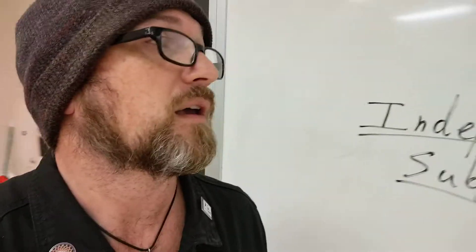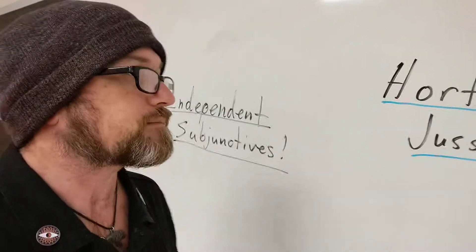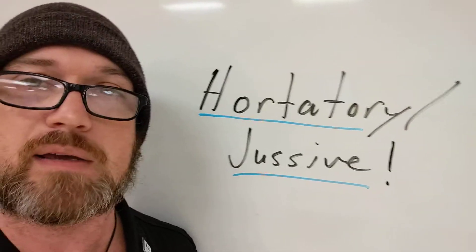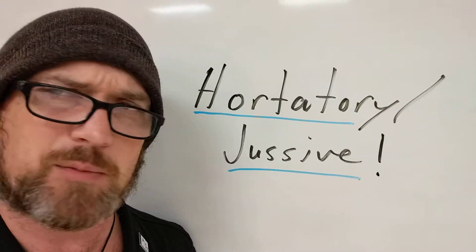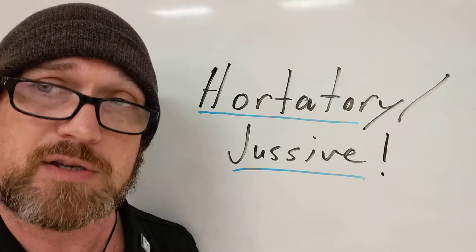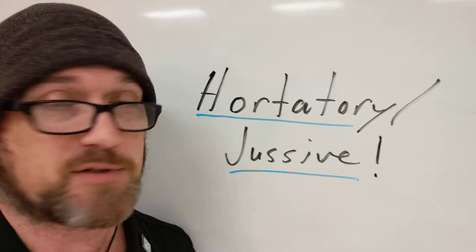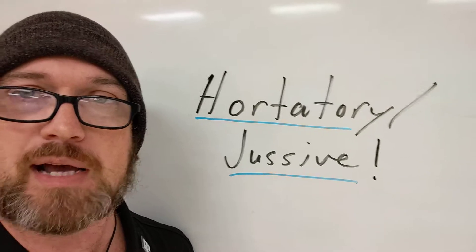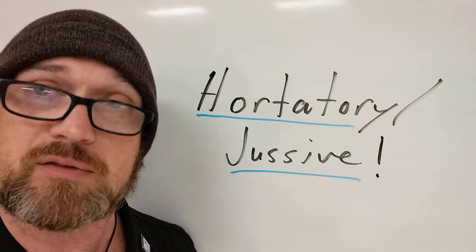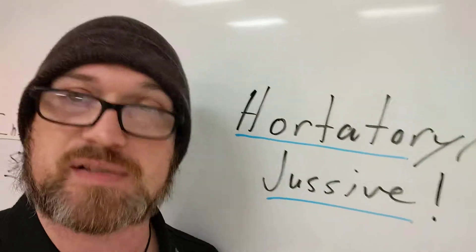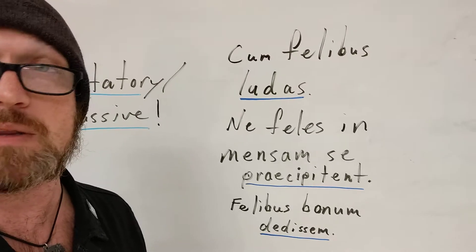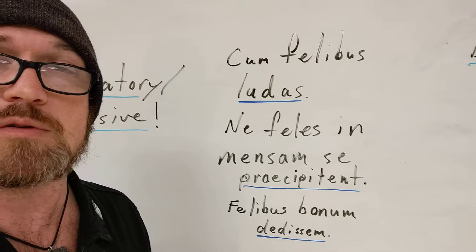Let's start with the most basic of them: the jussive or hortatory subjunctive. You could hear it referred to by either term. The textbook actually distinguishes these as different, but I don't find that distinction useful — I actually just think this distinction is kind of useless because in my view they are the same thing. This is often explained as a polite command, being really similar to a command. That's why it's called jussive — it's from the verb iubeo, to order.